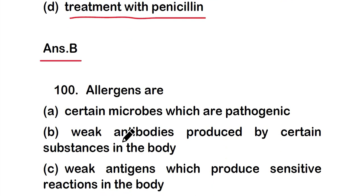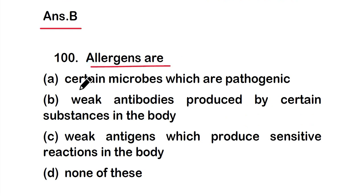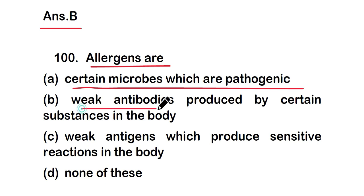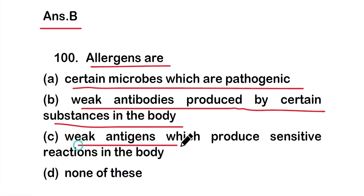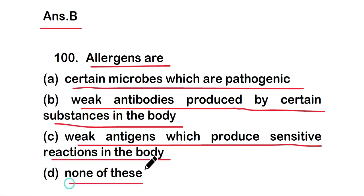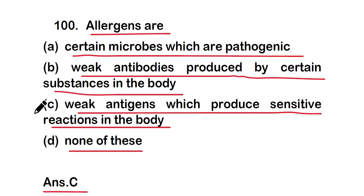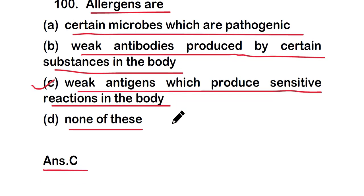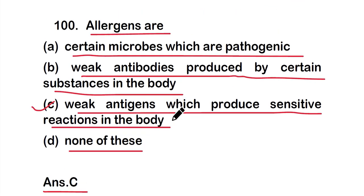Question number 100: Allergens are — option A: certain microbes which are pathogenic, option B: weak antibodies produced by certain substances in the body, or option C: weak antigens which produce sensitive reactions in the body. The correct answer is option C — allergens are weak antigens which produce sensitive reactions in the body. These are all 20 questions of Part 5 of the MCQ series on immunology. Thank you for watching.